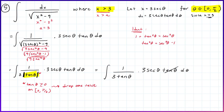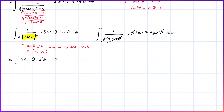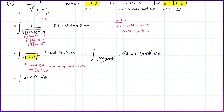One of those tangents cancels and the 3 cancels, and our integral becomes simply the integral of sec(θ) dθ — no constants left. So we've reduced it to just the integral of secant.